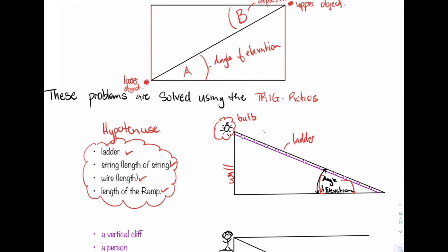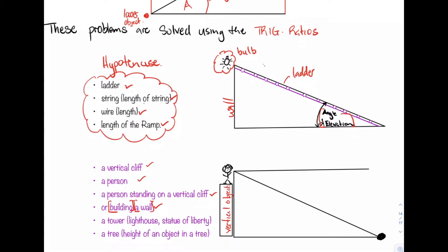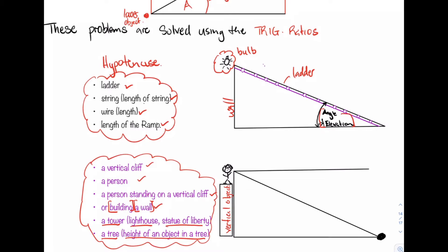Let's look at some more terms. A vertical cliff, a person standing on a vertical cliff, a building, a wall, a tower, a lighthouse, the Statue of Liberty, a tree, or the height of an object in a tree — all of these objects relate to the opposite side. So if the question asks us to find the length of the cliff, the height of the person, the height of the wall, or the height of the tower, it's asking us to find the opposite side.